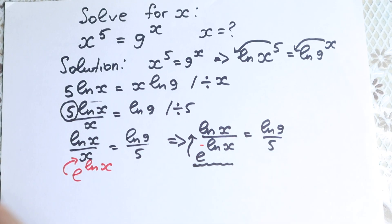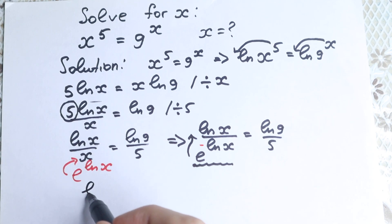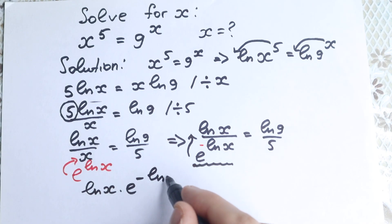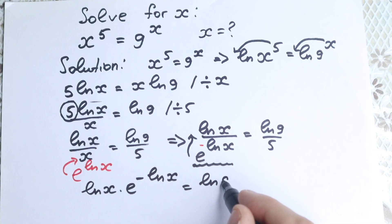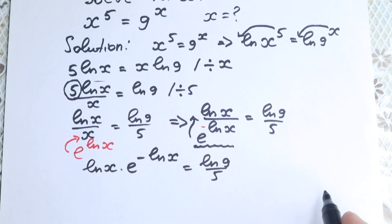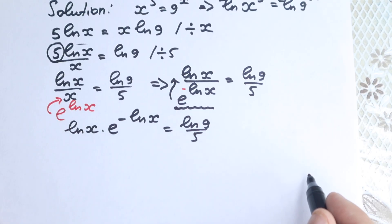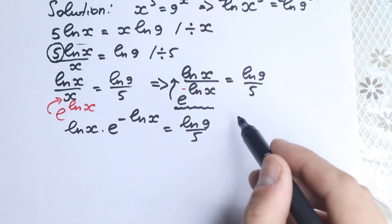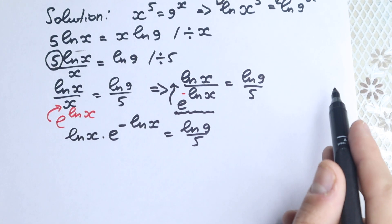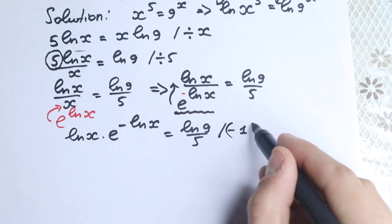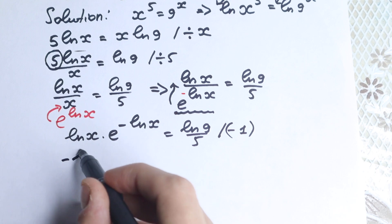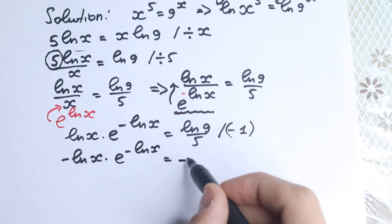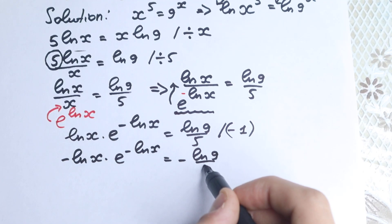We will have ln(x)·e^(−ln x) equal to ln(9)/5. Now let's multiply both sides by −1, and I'm going to show you why we need to do this. So we have −ln(x)·e^(−ln x) equal to −ln(9)/5.